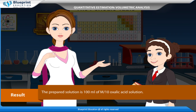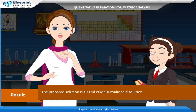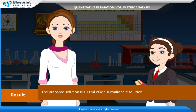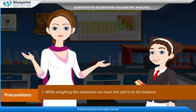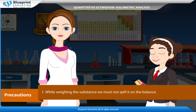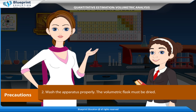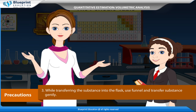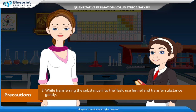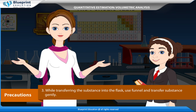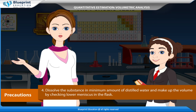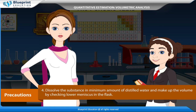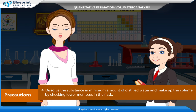Result: The prepared solution is 100 ml of M by 10 oxalic acid solution. Precautions: While weighing the substance, do not spill it on the balance. Wash the apparatus properly and the volumetric flask must be dried. While transferring the substance into the flask, use a funnel and transfer the substance gently. Dissolve the substance in a minimum amount of distilled water and make up the volume by checking the lower meniscus in the flask.